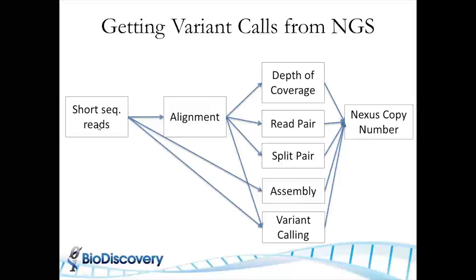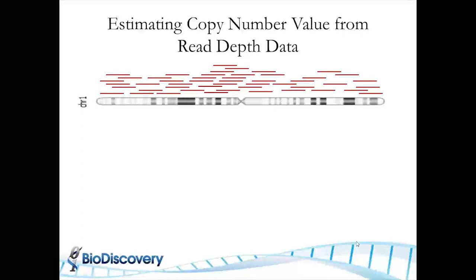One more item before proceeding: once you get your copy number data you can also get smaller INDELs and SNPs — the variant call. You can bring all of that into NGS copy number and have an integrated view of all the changes happening in the DNA for a single sample and aggregate data for multi-sample analysis.